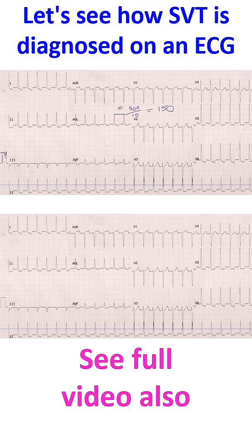Below 60 per minute it is bradycardia. Normal individuals can have tachycardia during exercise, anxiety, and fever. Similarly, they can have sinus bradycardia during deep sleep. There are other conditions which can cause these, but we will not go into those details.